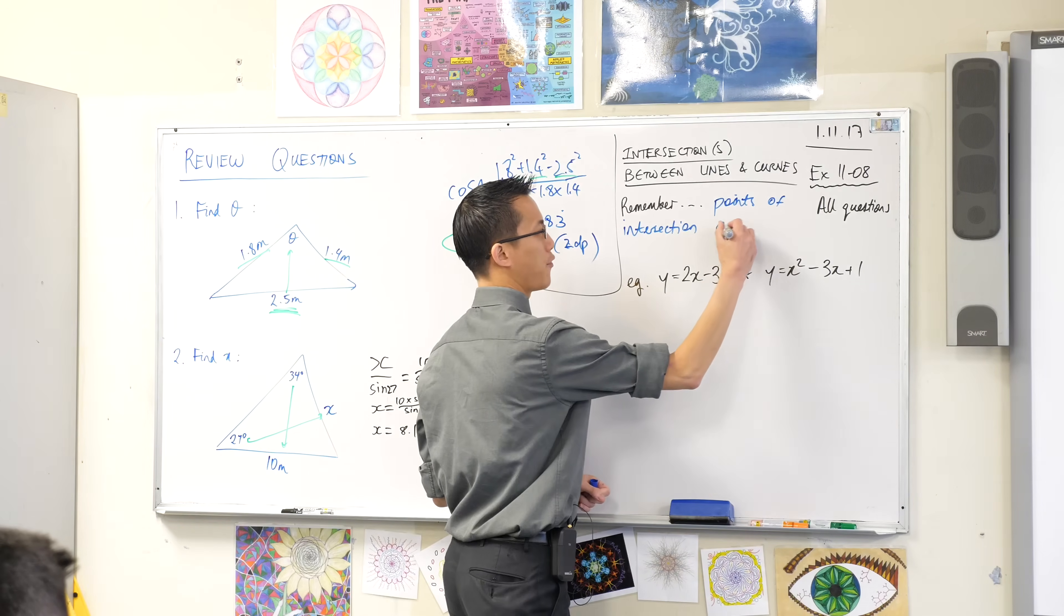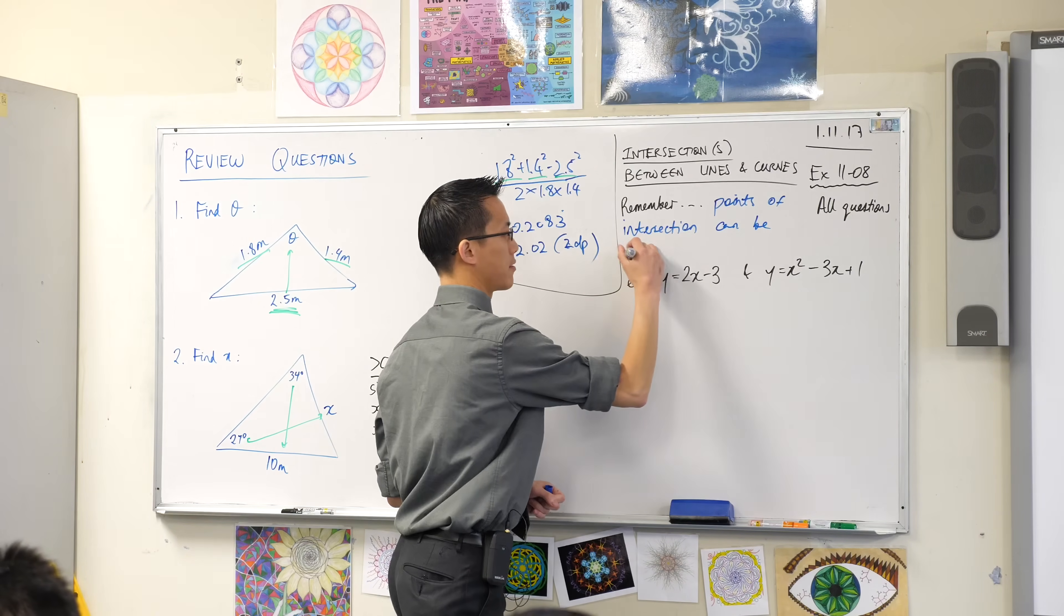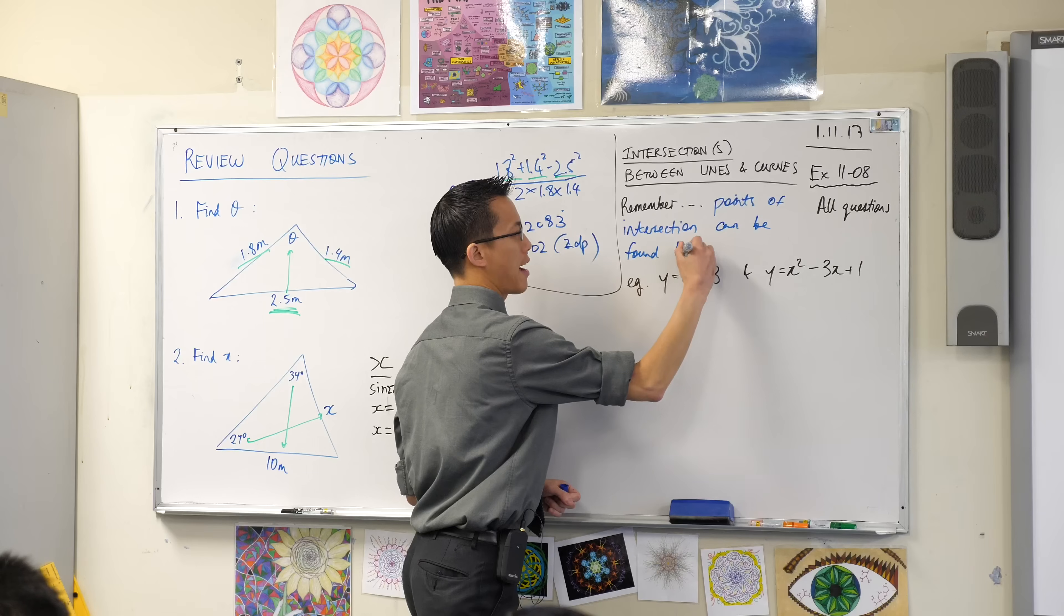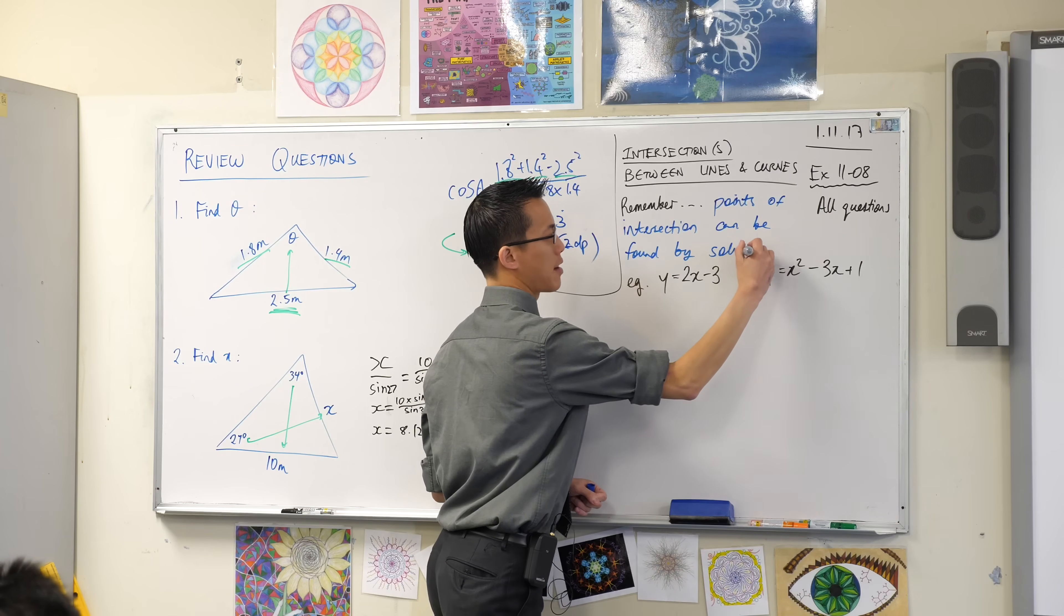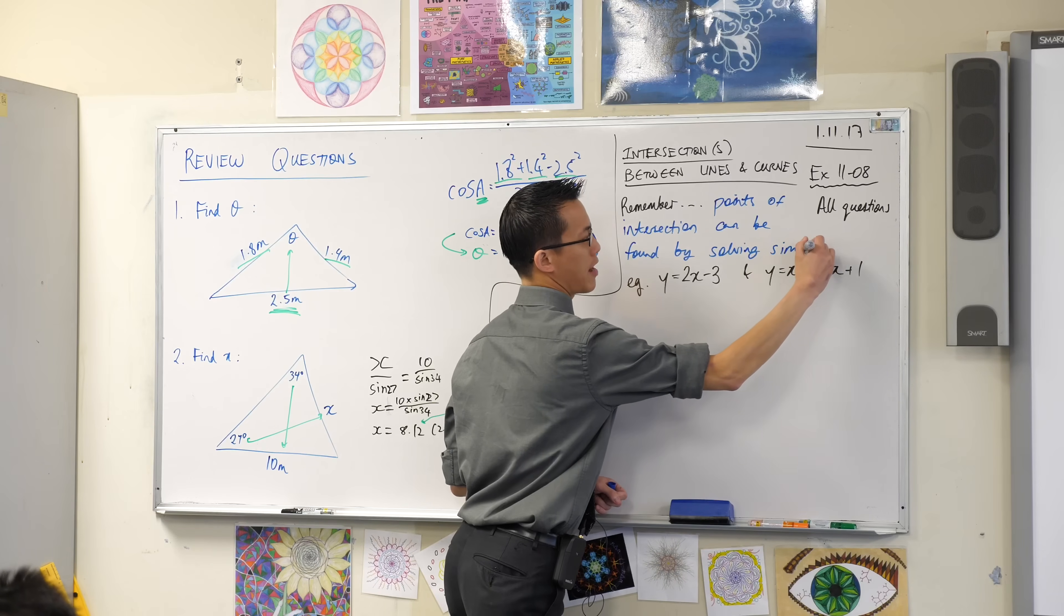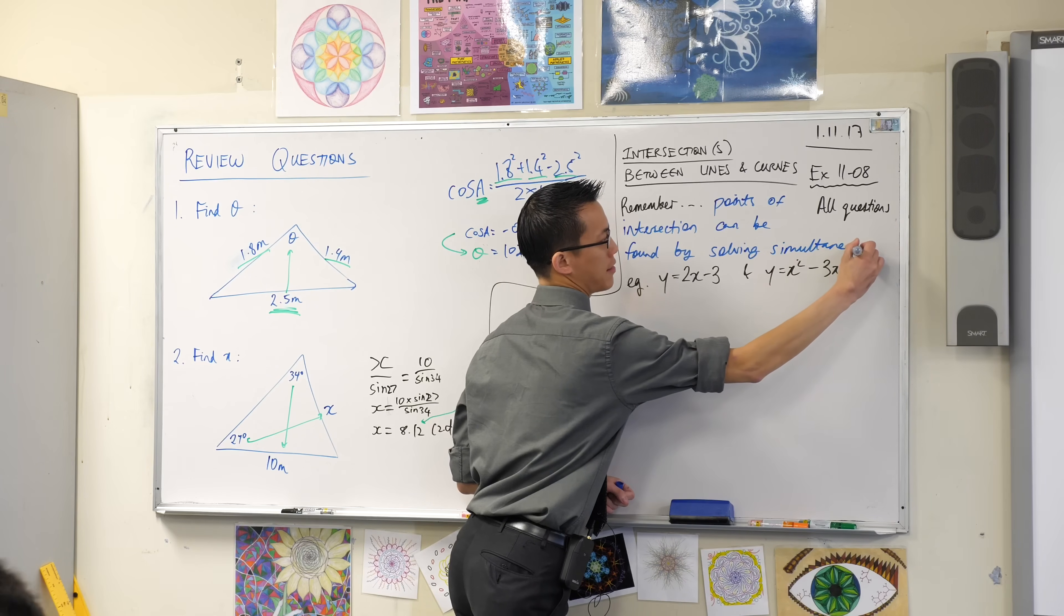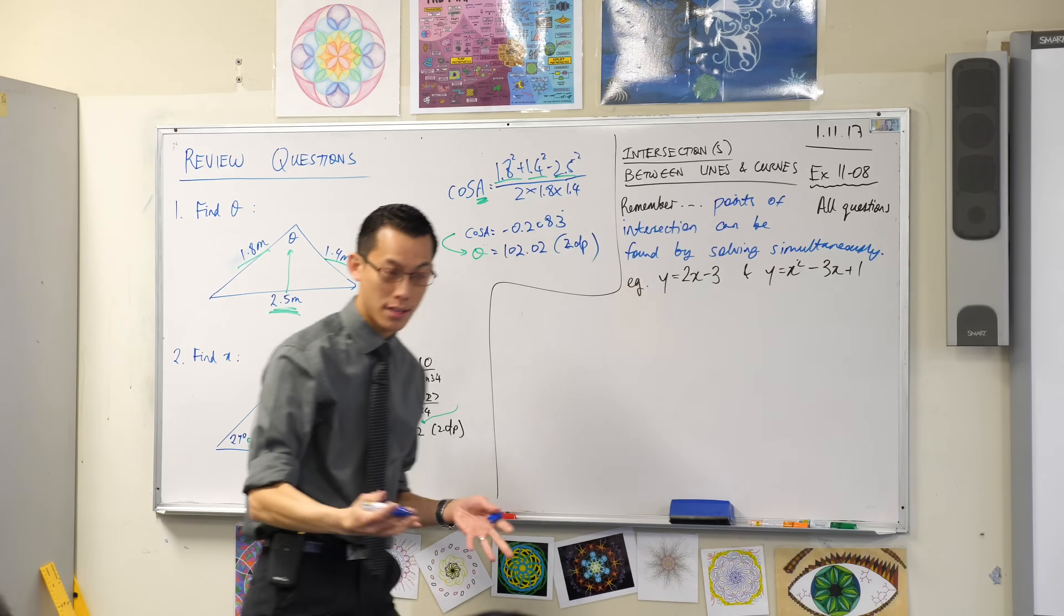So points of intersection can be found by solving simultaneously. Ordinarily you don't have to write this down, I just want this as an example.